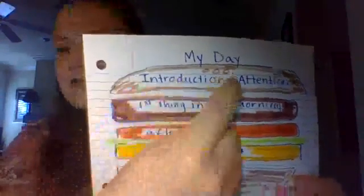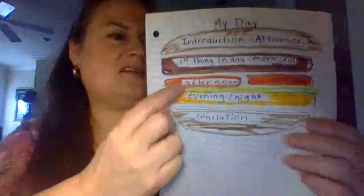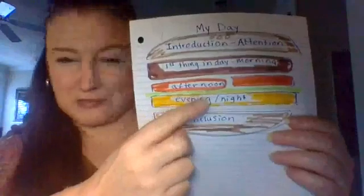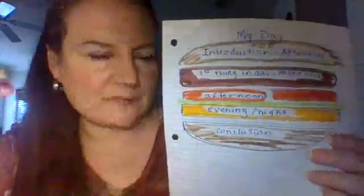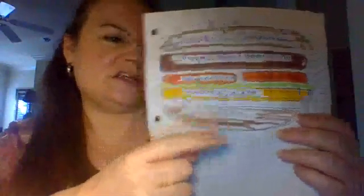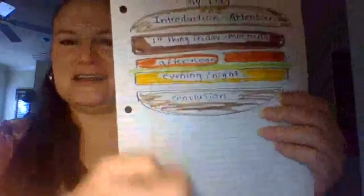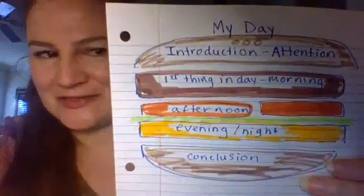Let's review: the introduction is the top bun — get someone's attention with an interesting, maybe shocking sentence. The meat is the first thing in the day, morning. The tomato is the afternoon. The cheese is the evening or night. And the conclusion is the bottom bun — a final statement. You have to say a conclusion.